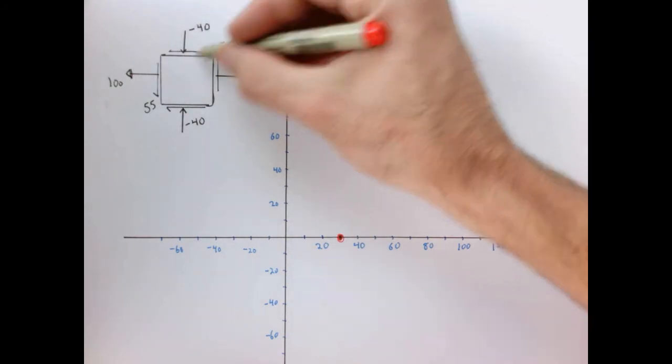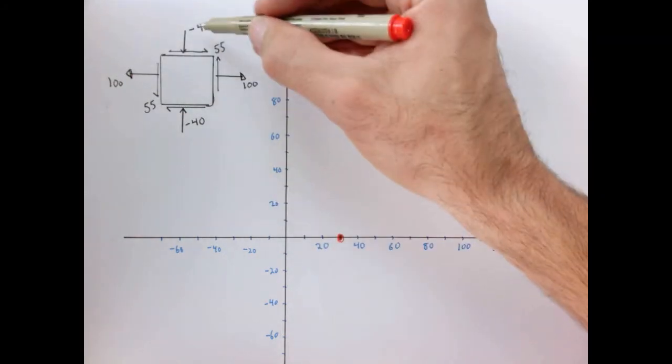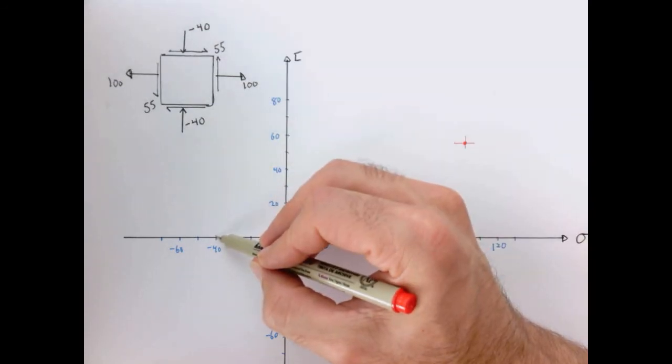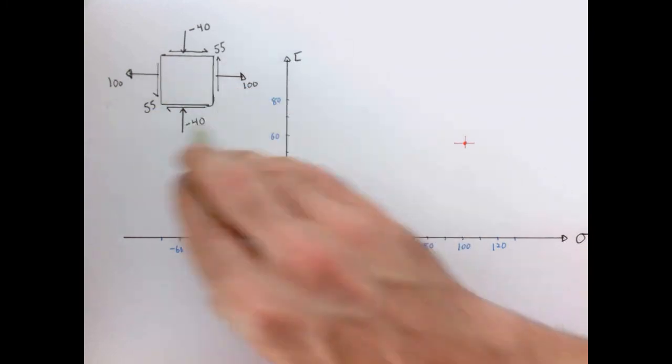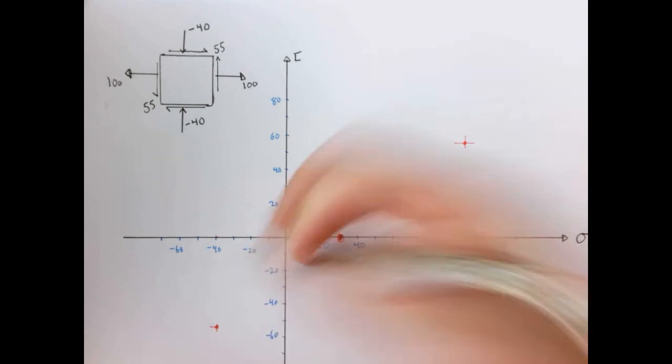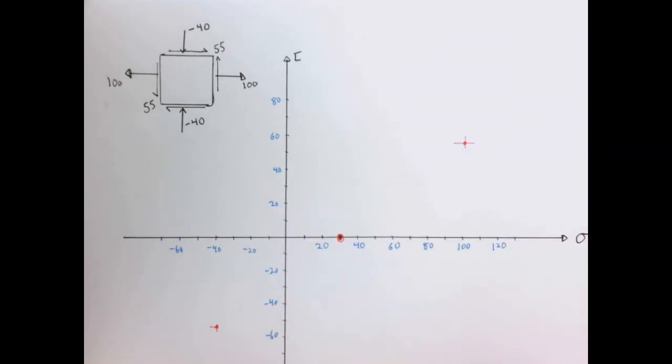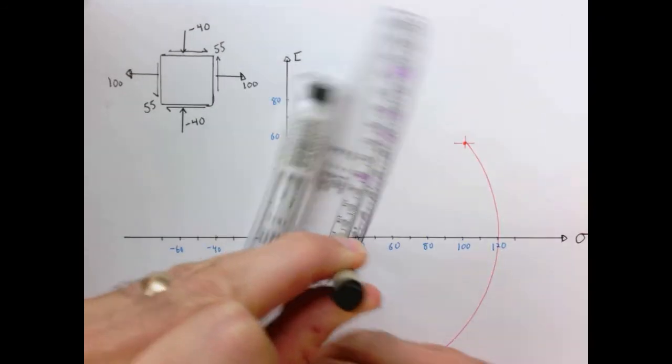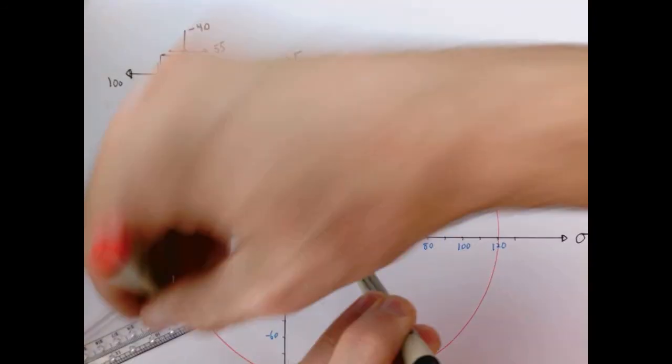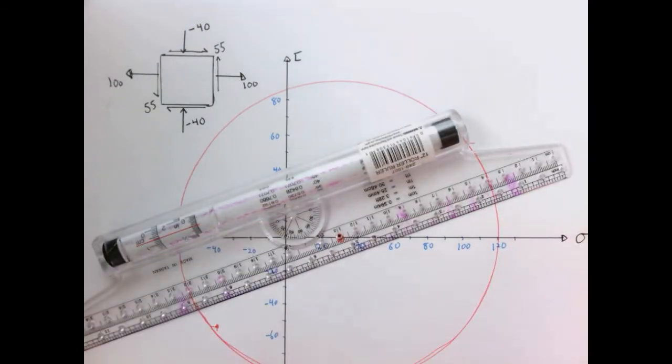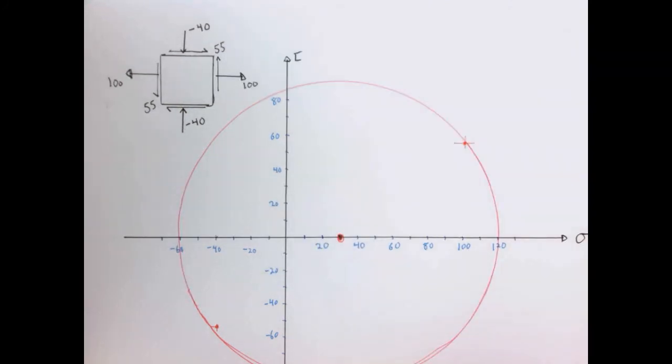Now we go up to this surface and we plot that point. Now here we have a negative 40. So we have to go to this point here. And the shear stress along this surface wants to rotate clockwise, so it's negative. So down here. And so there's the other point of our circle. Now, the last step is to draw the circle. And there it is. There's Mohr's circle for this arbitrary state of stress.